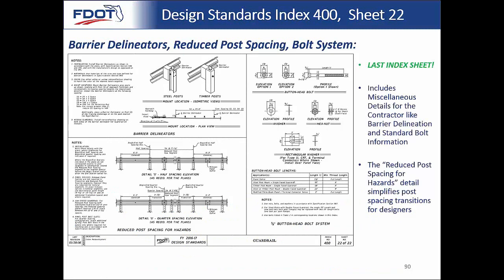Sheet 22 is our last index sheet, showing barrier delineators, reduced post spacing details, and the bolt system — miscellaneous details rounding out the index. We explain where barrier delineators go relative to post one, post two, and post three, and the spacing and number of spaces for each one throughout the run.